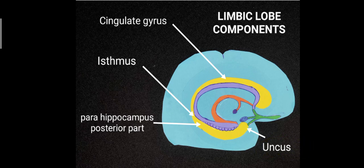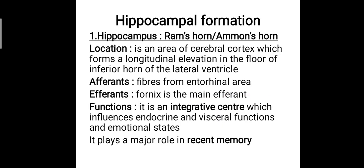The hippocampus is otherwise known as the ram's horn or Ammon's horn based on its appearance. It forms a longitudinal elevation in the floor of the inferior horn of the lateral ventricle. It receives afferents from the entorhinal area, related to the olfactory process. The fornix is the main efferent of the hippocampus. Its functions include being an integrative center influencing endocrine and visceral functions, emotional states, and it plays an important role in recent memory.